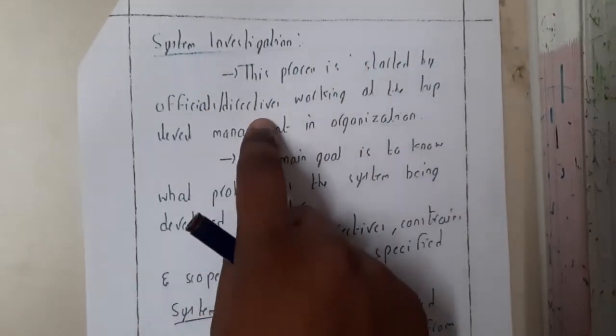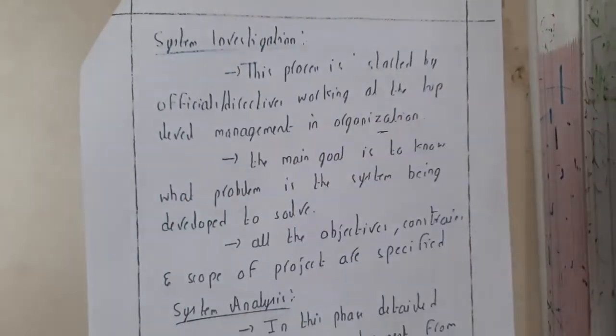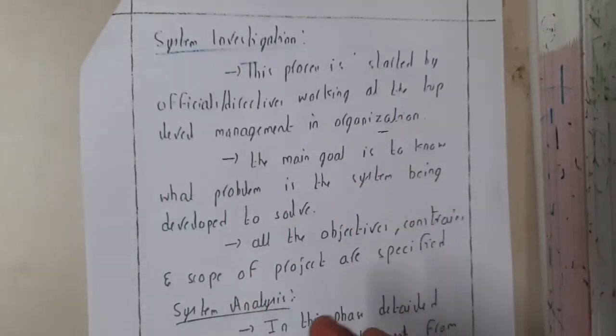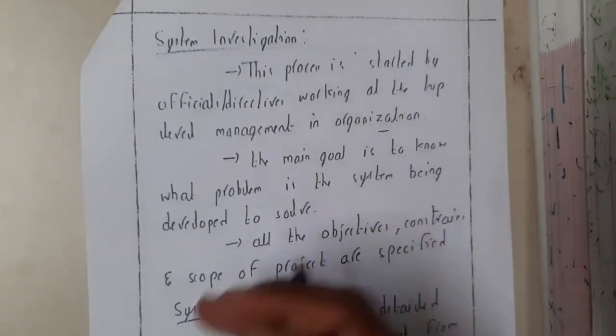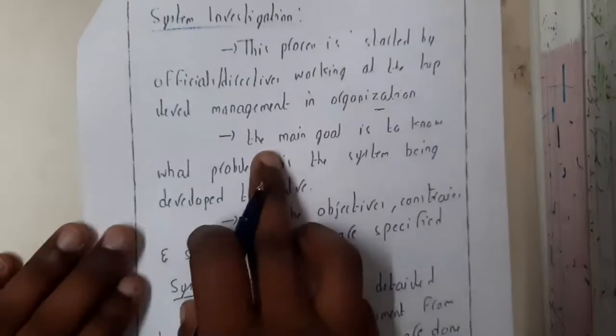The main goal is to know what problem in the system being developed to solve. So first of all, if you want to solve a problem, the problems would exist, right? So that problem identification is done here. All the objectives, constraints, and scope of the project are specified.